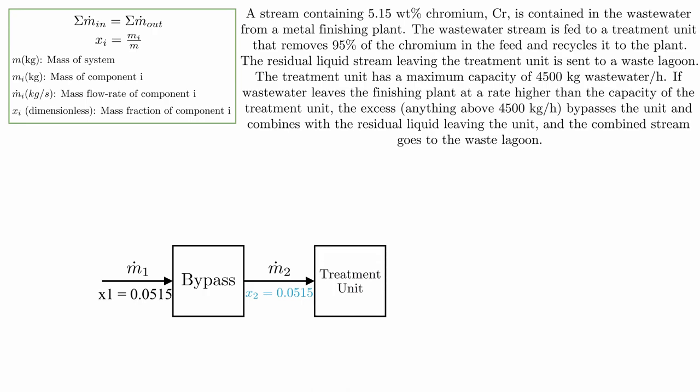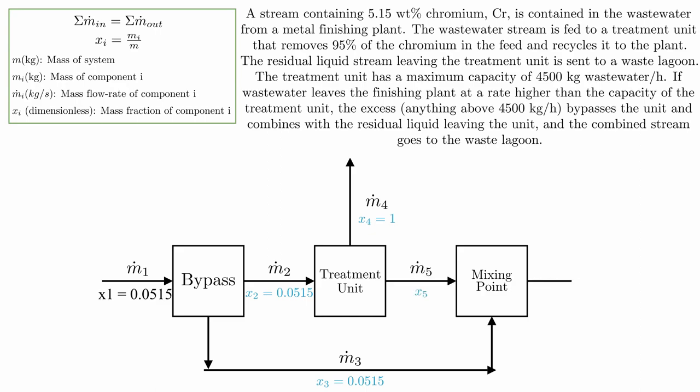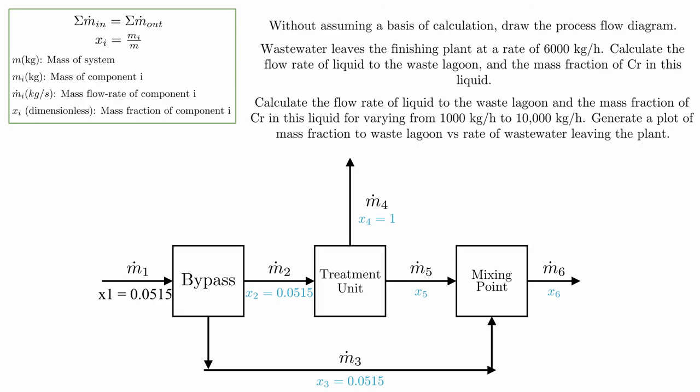Now let's finish labeling our diagram. Part of stream 2 enters the treatment unit to remove chromium, and stream 3 bypasses the system to the mixing point, which is combined with stream 5 to produce the final treated water, stream 6. Now if you got this far, then definitely try to solve the rest of the mass balance by yourself. Remember that the goal is to treat the chromium. That means we want to have x6 to be as small as possible.